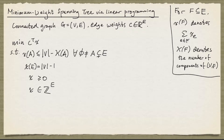We're going to look at the minimum weight spanning tree problem in connection with linear programming. We're given a connected graph G with node set V and edge set E, and edge weights given by the vector C with entries indexed by elements of E. We claim that this integer linear programming problem here is a formulation of the minimum weight spanning tree problem, and we're going to see why that's the case.